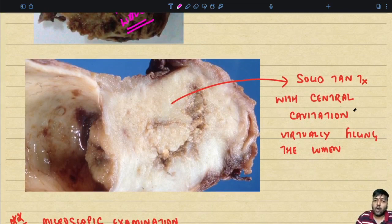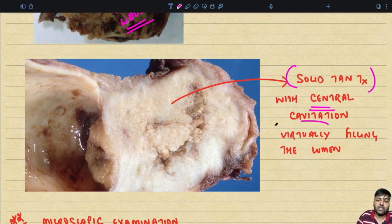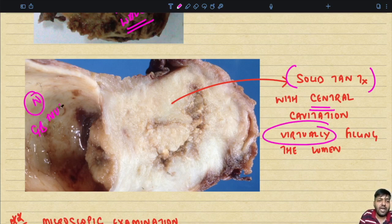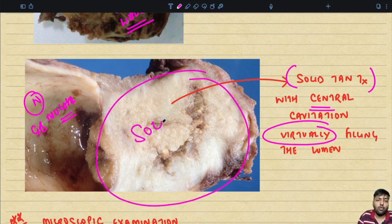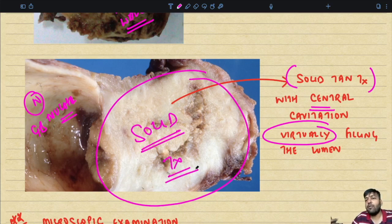Sometimes the gallbladder carcinoma presents as a solid tan tumor with central cavitation, virtually filling the lumen. You can appreciate the normal GB mucosa and the tumor presenting as a large solid tumor with central cavitation. This is the way in which gallbladder carcinoma can present grossly.